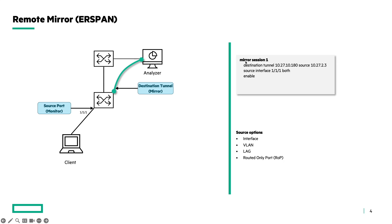How does this work? First you define your mirror session — mirror session 1. Then you specify the destination. The destination in this example will be a tunnel — destination tunnel — this means a GRE tunnel, and then you specify the IP address of the analyzer: 10.27.10.118. The last step is to specify the source IP: 10.27.2.3. This is an IP address of the switch, so this will be the source IP of the GRE packets. Remember that it is not possible to specify the IP address of the management port to be used as a source.